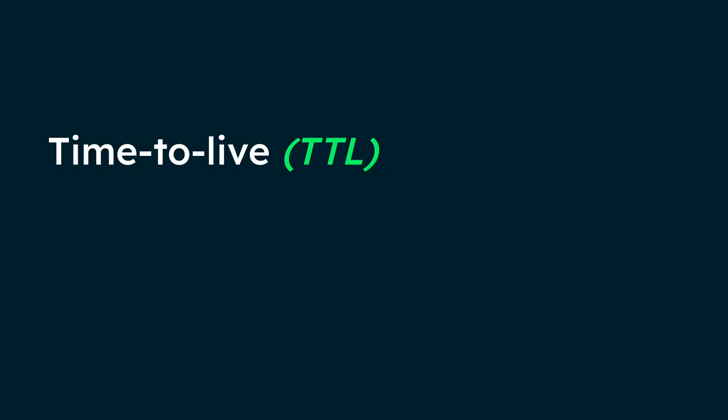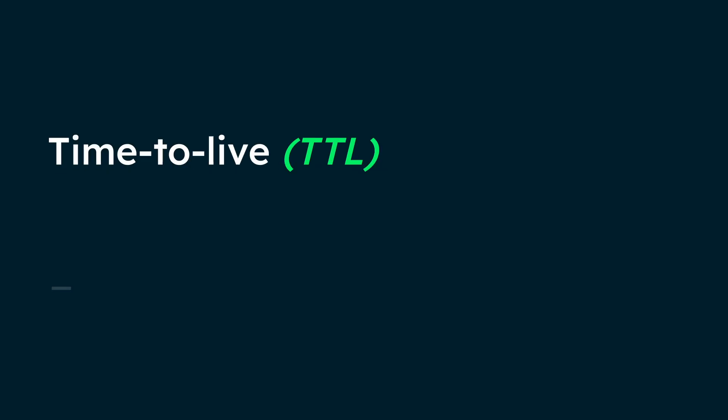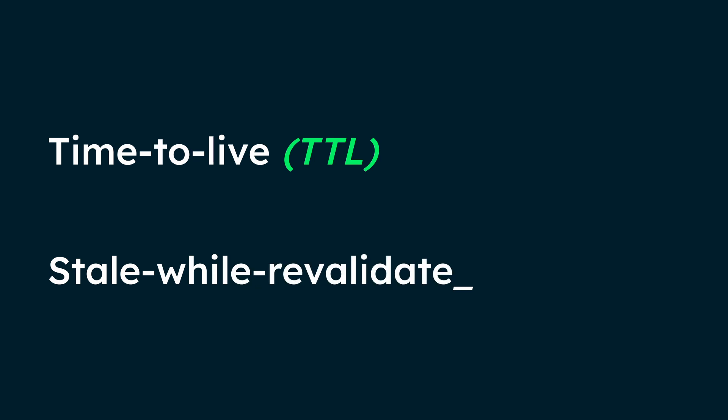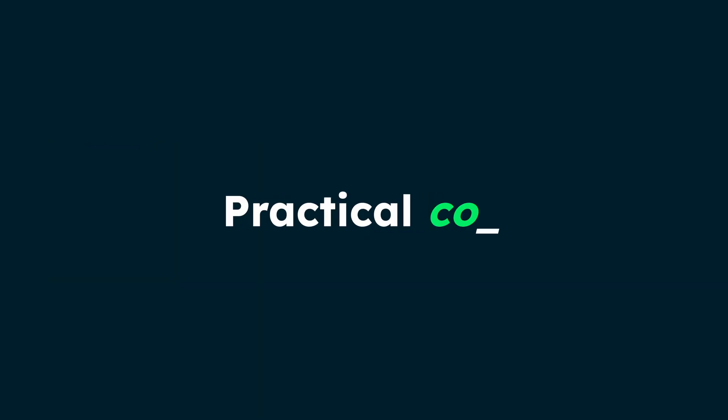Prisma Accelerate provides two caching strategies: Time to Live (TTL), which caches data for a specified period of time, and Stale While Revalidate (SWR), which serves cached data immediately while refreshing in the background. When using Prisma ORM with MongoDB, these implementation details are important.